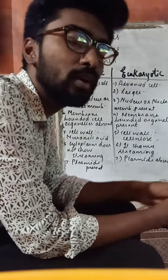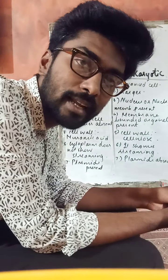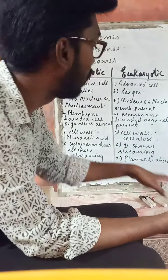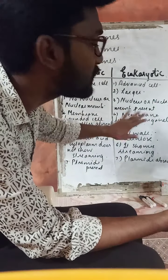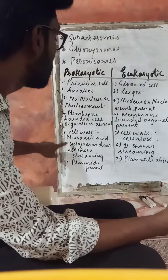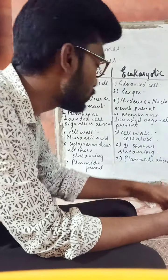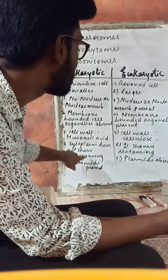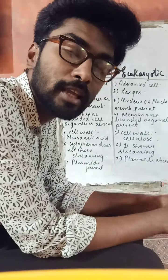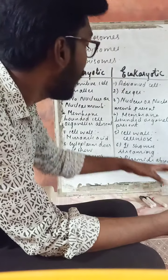Fifth point: the prokaryotic cell wall is generally made up of peptidoglycan or muramic acid. In eukaryotic cells, the plant cell wall is made up of cellulose, while the animal cell does not contain a cell wall. Sixth point: cytoplasm does not undergo streaming movement in prokaryotic cells, but in eukaryotic cells, the cytoplasm generally shows streaming movement.